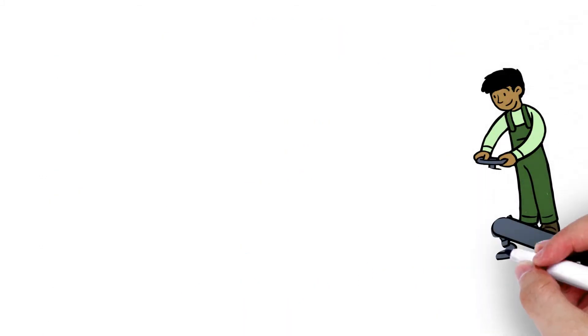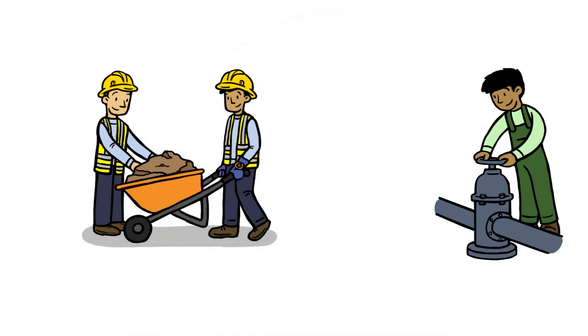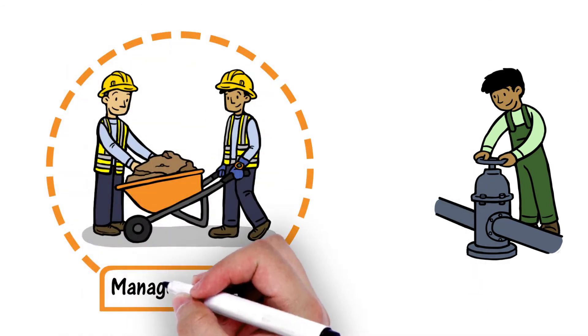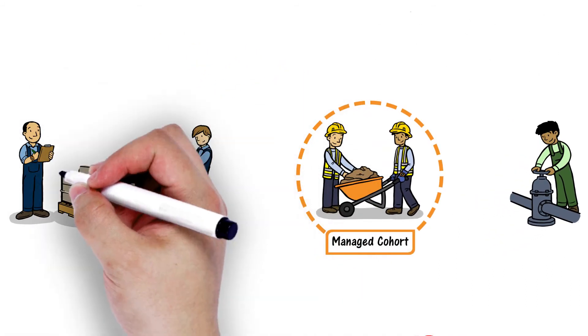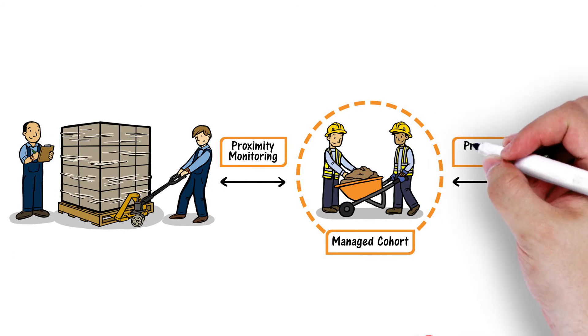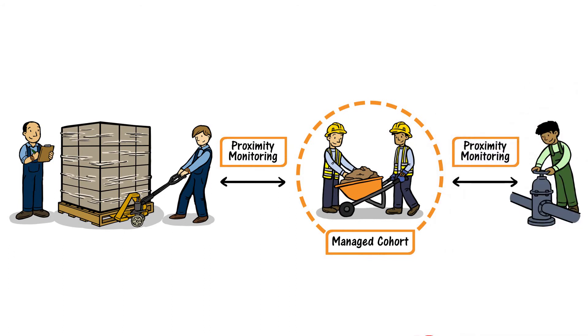Do you have teams who must work closely together? Create cohorts to manage their ability to work together without triggering proximity alerts within their cohort while still gathering data on how often they interact. Be assured they will be alerted if they approach individuals outside their cohort.